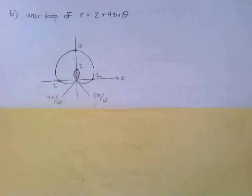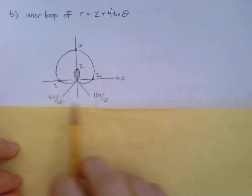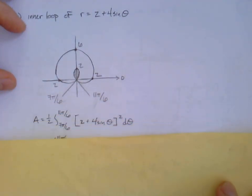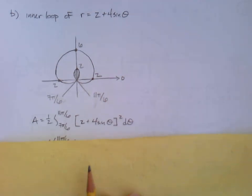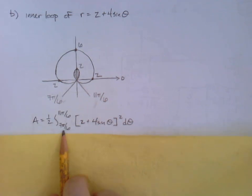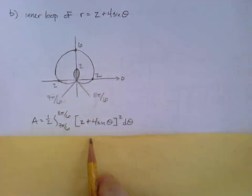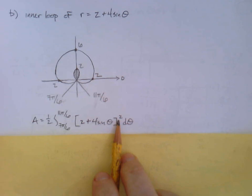Okay. So what do we do with that? Well, really, that's the hard part. That can be the most difficult part of any of these, just identifying those angles. Now it's just a matter of executing the integral, just a matter of. So we could say, hey, let's do 1 half. 7 pi over 6 to 11 pi over 6, and then we've got our function, 2 plus 4 sine theta quantity squared d theta.